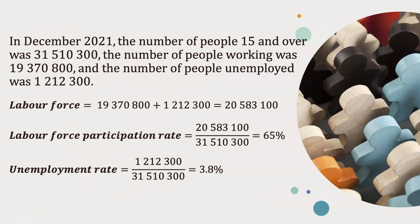Now that we've covered all the concepts related to labor statistics, let's try an example. After looking up the most recent data from Stats Canada, I found that in December of 2021, there were just over 31 million people 15 years or older, of which just over 19 million were employed and just over 1 million were unemployed. The labor force is determined from employed plus unemployed: 19,370,800 plus 1,212,300, giving a labor force of 20,583,100 people. The labor force participation rate is 20,583,000 divided by the working age population of 31,510,000, giving a participation rate of approximately 65%.